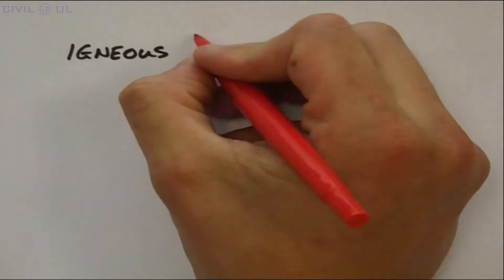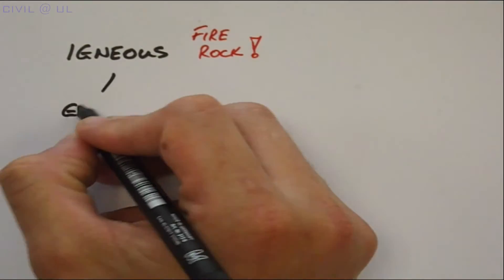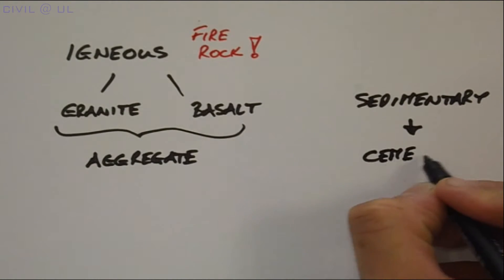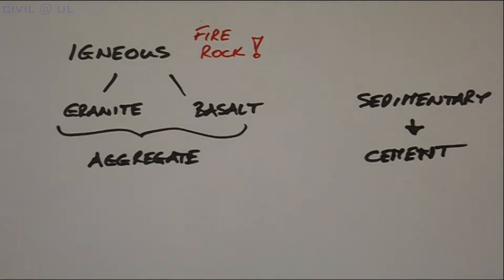For example, the igneous or fire-borne rocks of granite or basalt make excellent aggregate for concrete manufacture, while the sedimentary deposits are used to manufacture cement.